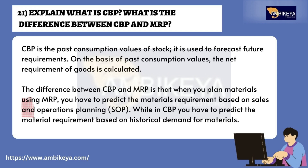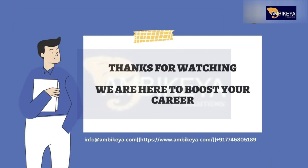Question number twenty-one: explain what CBP is and what is the difference between CBP and MRP. CBP (Consumption-Based Planning) uses past consumption values of stock to forecast future requirements. The difference between CBP and MRP is that when planning materials using MRP, you predict material requirements based on Sales and Operations Planning (SOP), while in CBP you predict material requirements based on historical demand for materials.